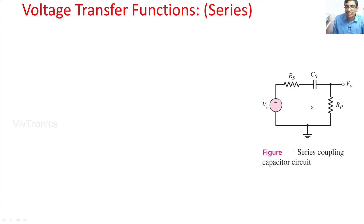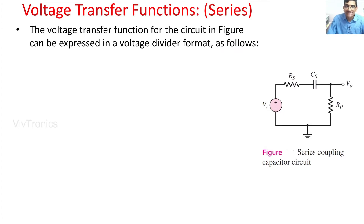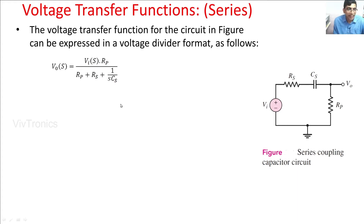First, we get the voltage transfer function of a series coupling capacitor circuit. This circuit represents the input side of the amplifier: Vi and RS form the signal source, CS is the coupling capacitor, and RP is the input impedance of the amplifier. The transfer function is derived in the s-domain, where the reactance of a capacitor is ZC = 1/(sC). After obtaining the transfer function, we replace s with jω, where ω = 2πf, to express it as a frequency function.